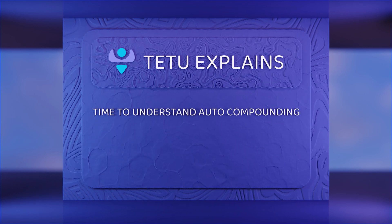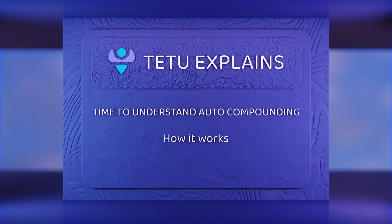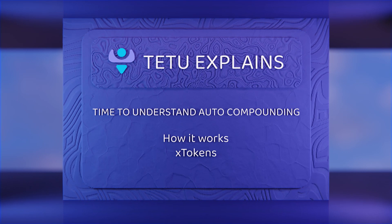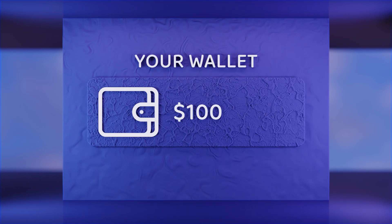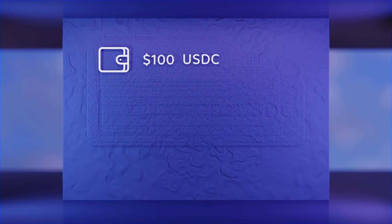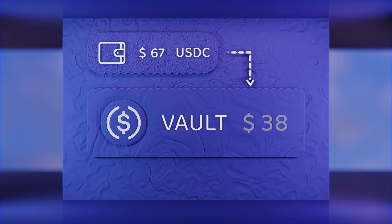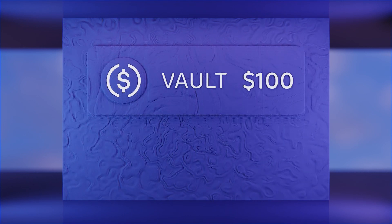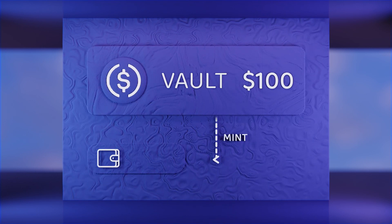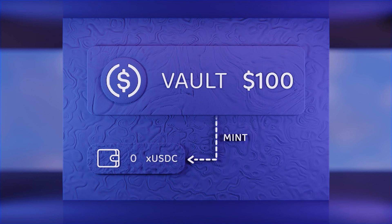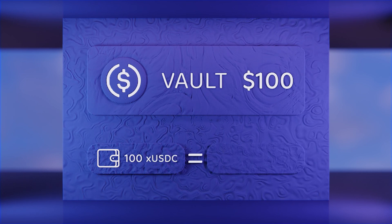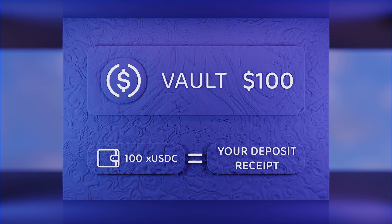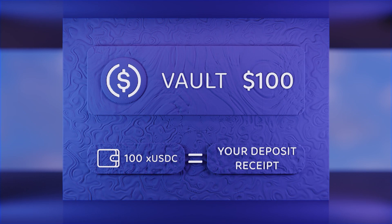Hello everyone. Let's understand the auto compound process. In this example, the investor deposits $100 USDC and receives 100X USDC, which is a deposit receipt. X USDC are received and held in the user's own wallet.